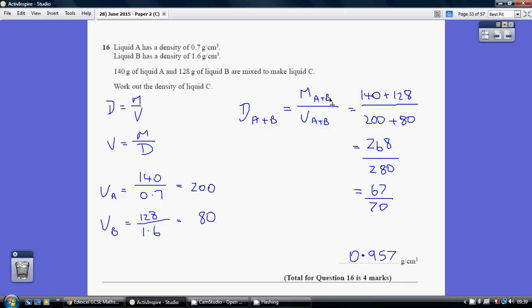The mass of A and B together is just the 140 add the 128. The two volumes are what we've just worked out. So 268 divided by 280, 67 over 70 or 0.957.